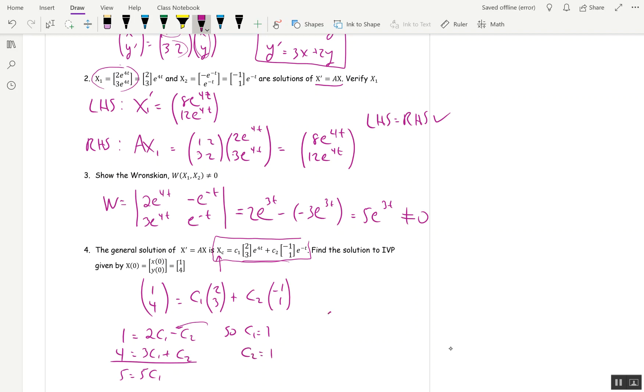So our initial value solution is X = (2, 3)e^(4t) + (-1, 1)e^(-t).